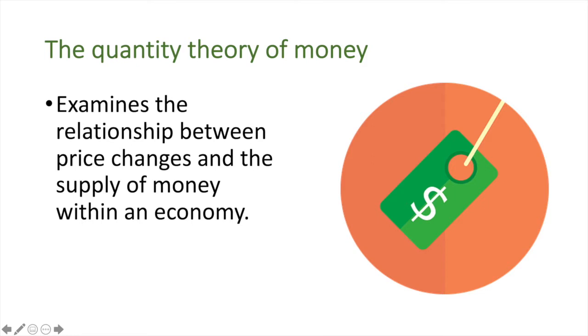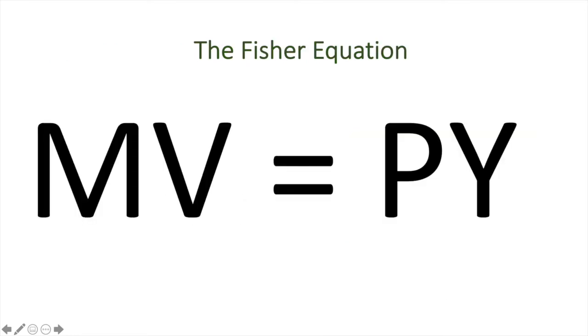A useful way to look at this relationship is the Fisher equation. The Fisher equation states that the money supply times its velocity of circulation is equal to the price level times real GDP. Let's look at the variables individually.